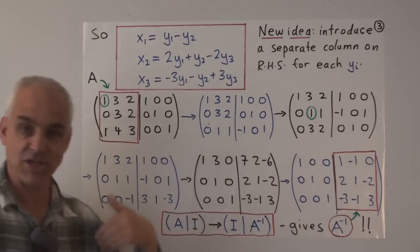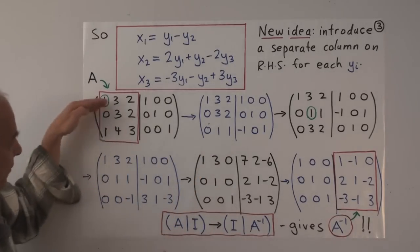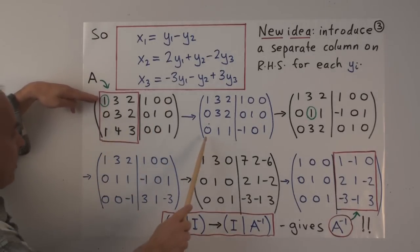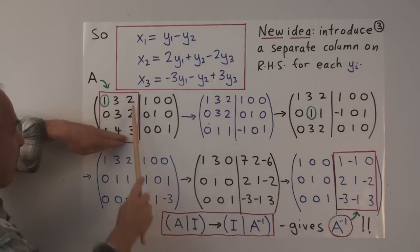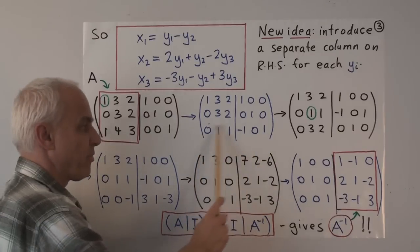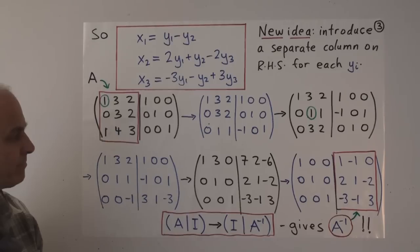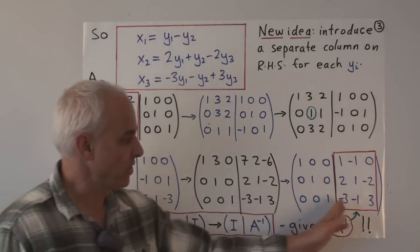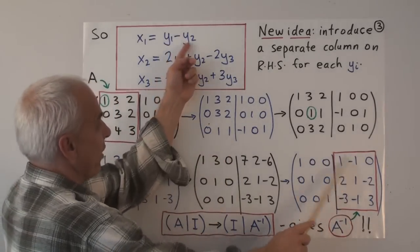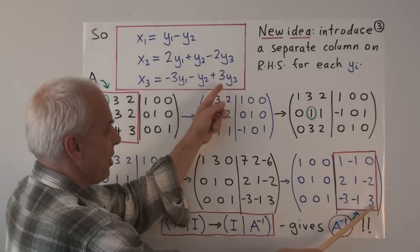Here I've gone through exactly the same operations as on the previous slide. For example, the first operation is to take this row and subtract this row: 1 minus 1 is 0, 4 minus 3 is 1, 3 minus 2 is 1, 0 minus 1 is minus 1, 0 minus 0 is 0, 1 minus 0 is 1. This represents the equation x2 plus x3 equals minus y1 plus y3. We end up with a matrix which represents that x1 equals y1 minus y2, x2 equals 2y1 plus y2 minus 2y3, and x3 equals minus 3y1 minus y2 plus 3y3.